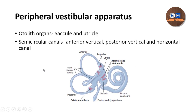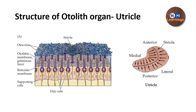Now we can discuss the peripheral vestibular apparatus, which contains the otolith organs and the semicircular canals. These are in the inner ear. In this diagram, you can see the utricle and the saccule, and the three semicircular canals — the anterior vertical, posterior vertical, and horizontal. Today's video discusses the otolith organs, starting with the utricle and then the saccule. Their function is almost the same; only their orientation differs.